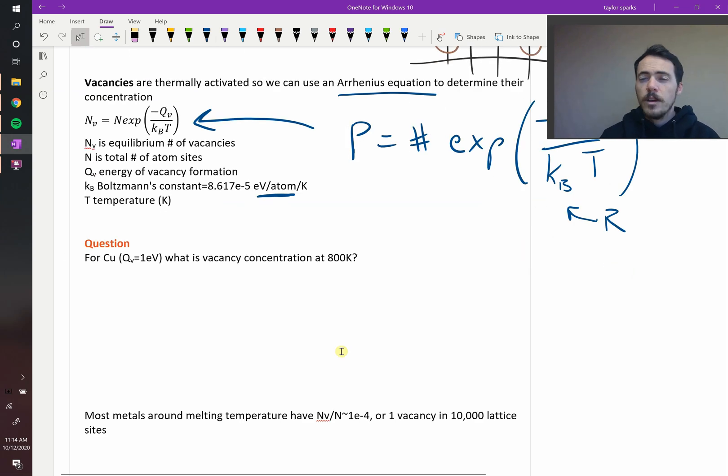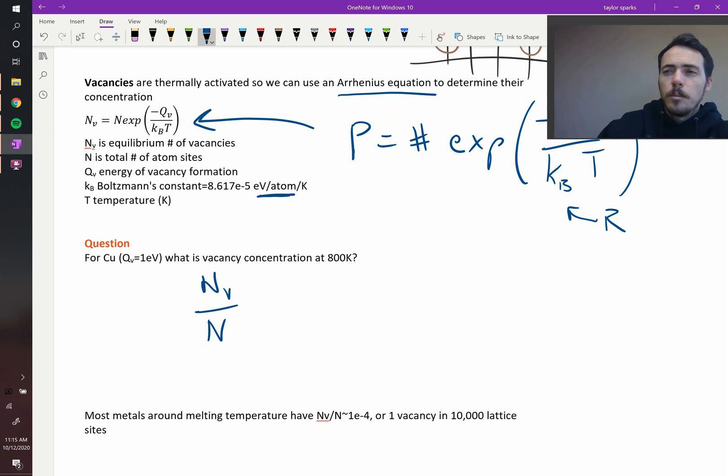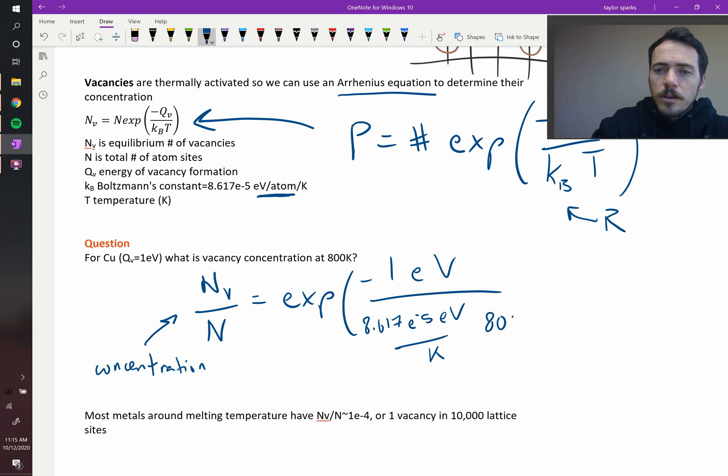Let's do a quick example calculation of this. The question says the following. For copper, if the vacancy formation energy is one electron volt, what would be the vacancy concentration in that crystal at 800 Kelvin? Well, we can do this. The concentration means the number of something divided by the total amount. So that's going to be Nv, the number of vacancies, divided by the total number of sites. That would be the concentration. That's going to be equal to exponential of negative 1 electron volt divided by KbT, so 8.617e to the negative 5 electron volts per K multiplied by the temperature, which was 800 Kelvin.